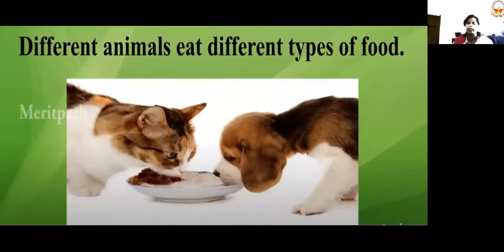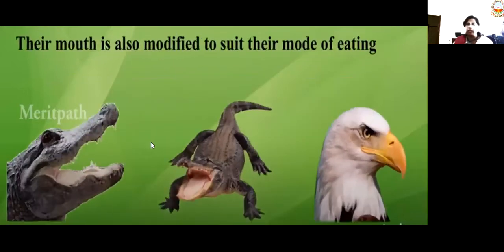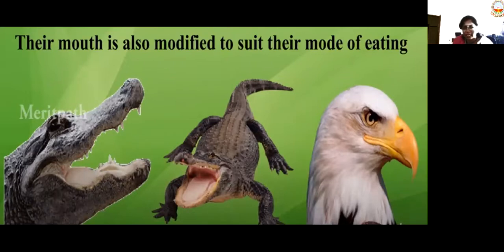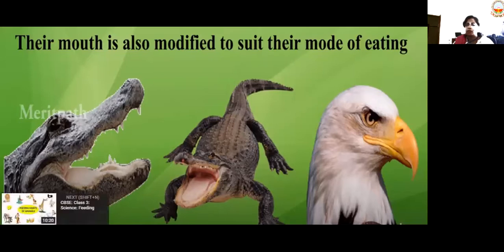Children, as I said, different animals eat different types of food. Dog eats in a different way, cat eats in a different way. As per the manners of eating and their different foods, their mouth is also modified to suit the mode of eating. Here you can see how crocodiles and birds have different mouths — what kind of food they eat, their mouth is like that.